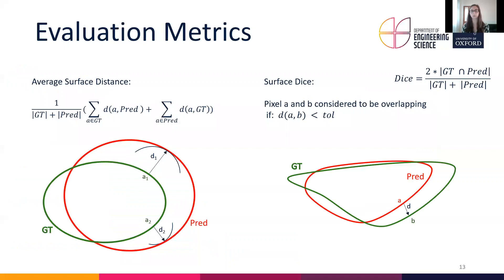Because we are predicting boundaries, a normal volumetric Dice score is not very suitable. For this reason we use two surface-based metrics to evaluate performance. The first is the average surface distance, which calculates for every point on the ground truth the shortest Euclidean distance to the prediction, and vice versa, and averages all those distances.